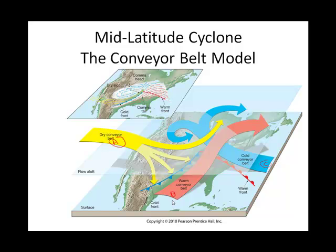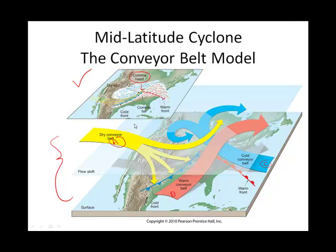This is a 3D sort of look at it down here, and up here is basically what the same scenario would look like on a surface map — something very similar to what we've been talking about, where you can have a centralized low pressure swinging around a cold front and a warm front. Can you see the comma shape? Here's the head and here's the tail. So this is an alternative to the polar front theory.